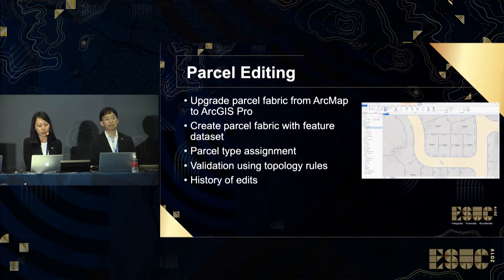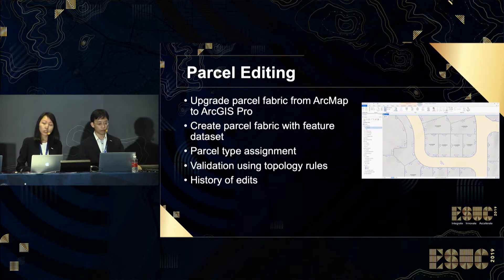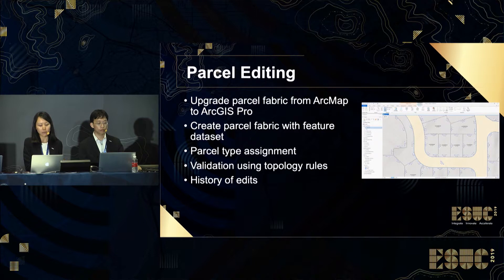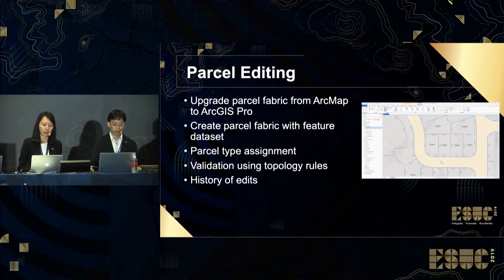You can build new parcel data or create missing parcel features from polygons and lines using feature datasets. Different parcel types such as ownership parcels, administrative parcels, and subdivision parcels can be assigned to a parcel fabric. To manage data quality, different geodatabase topology rules and parcel rules can be used to identify and fix errors. By keeping information of each parcel edit, this can help maintain the accuracy of the parcel data.